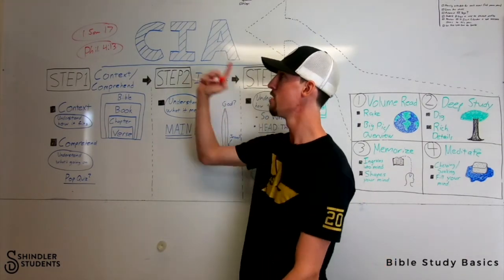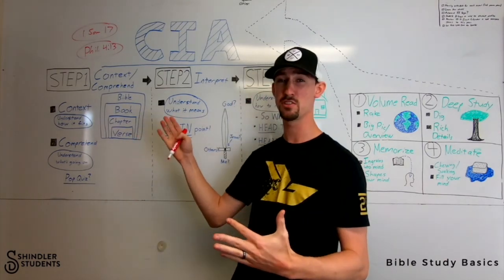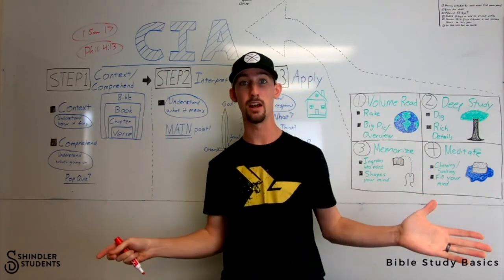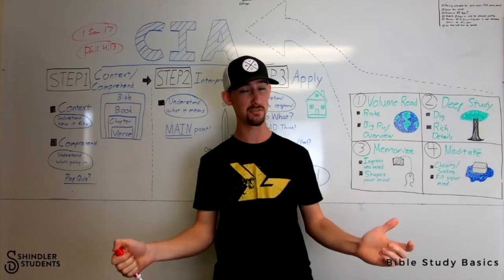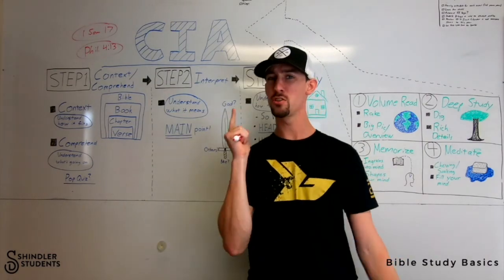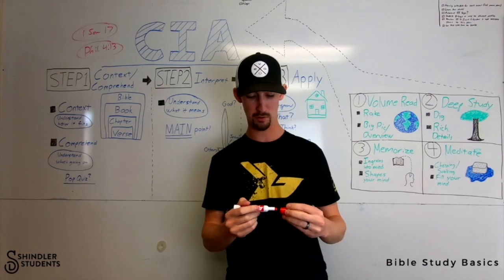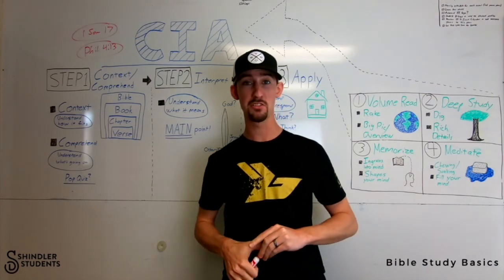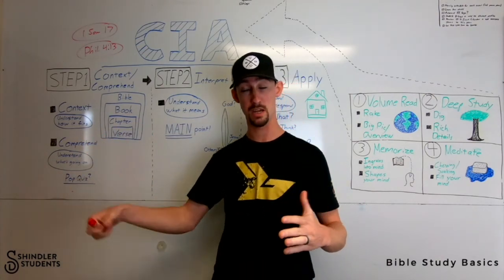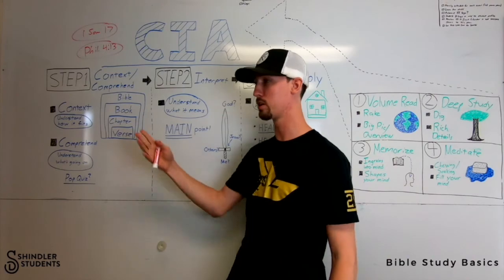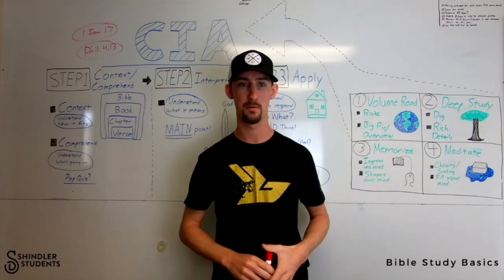So let's do 1 Samuel 17 first. Basically, 1 Samuel 17 is the story of David and Goliath, which most of us know, but it's also misunderstood a lot of times. A lot of you probably remember a couple of months ago we actually went through this story in youth. But we're going to use it as an example here as though you were doing it in your own Bible study.